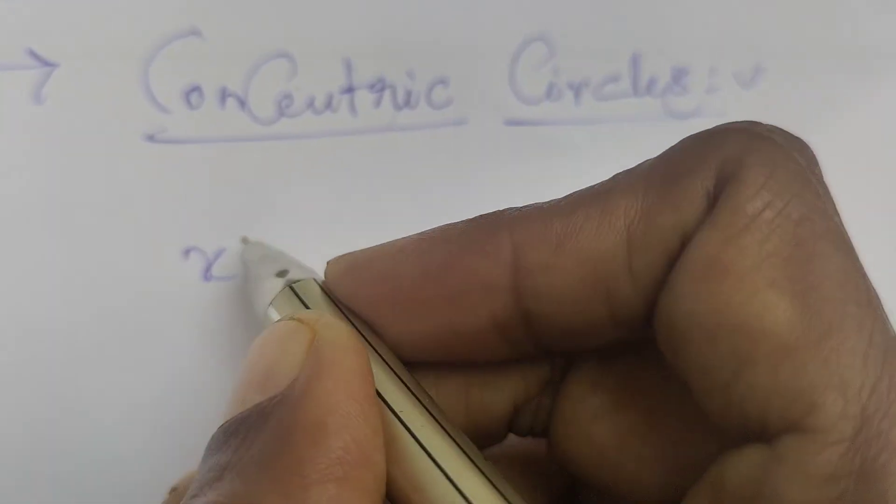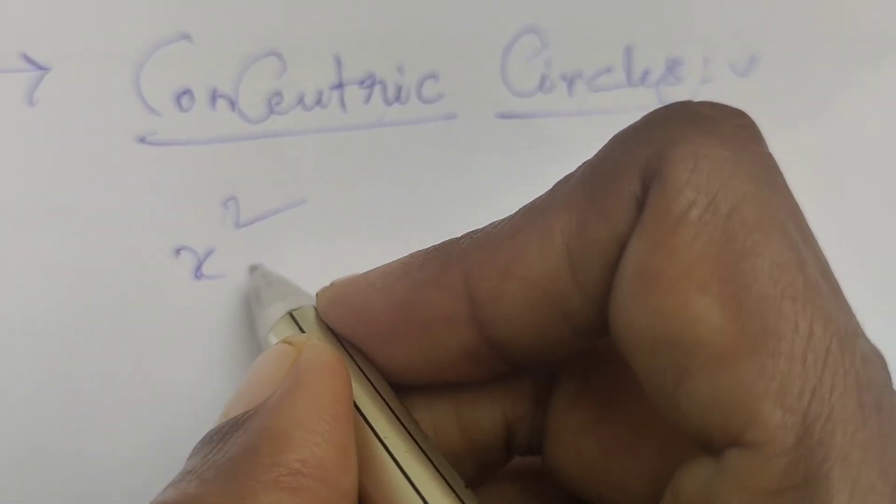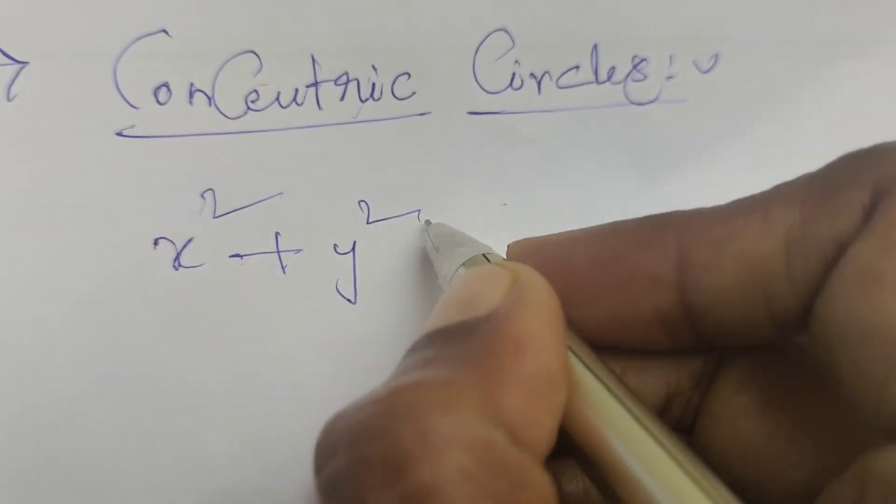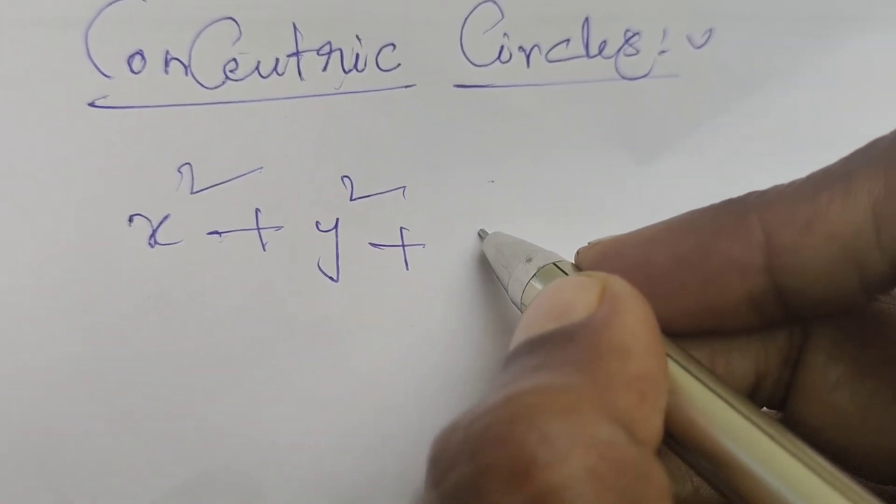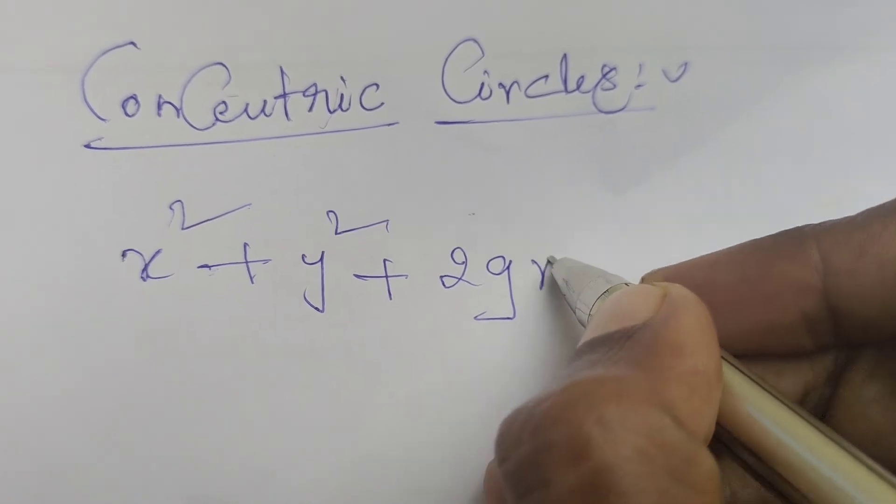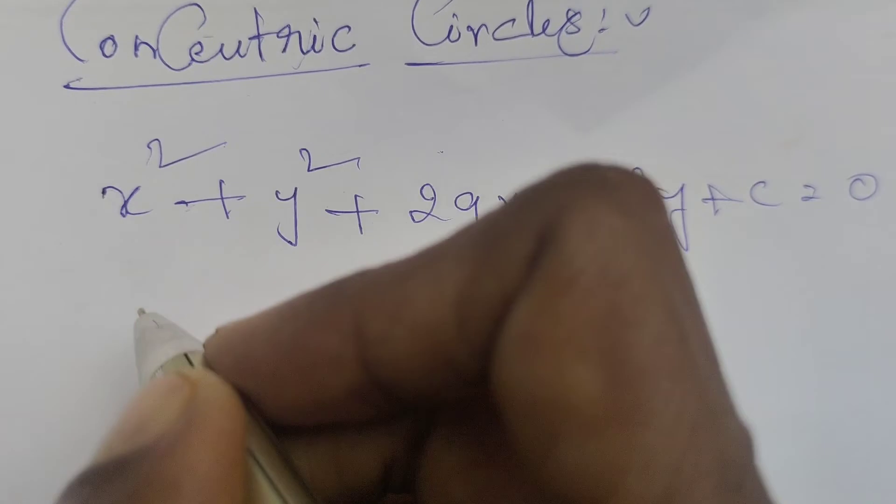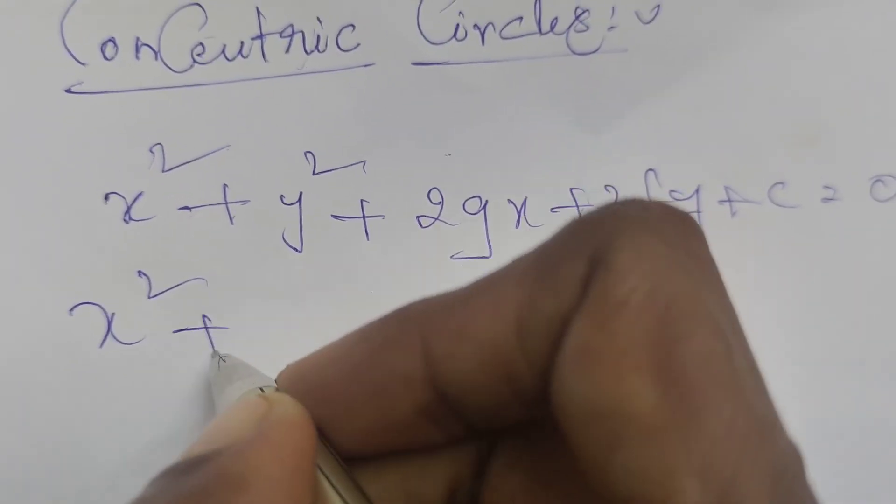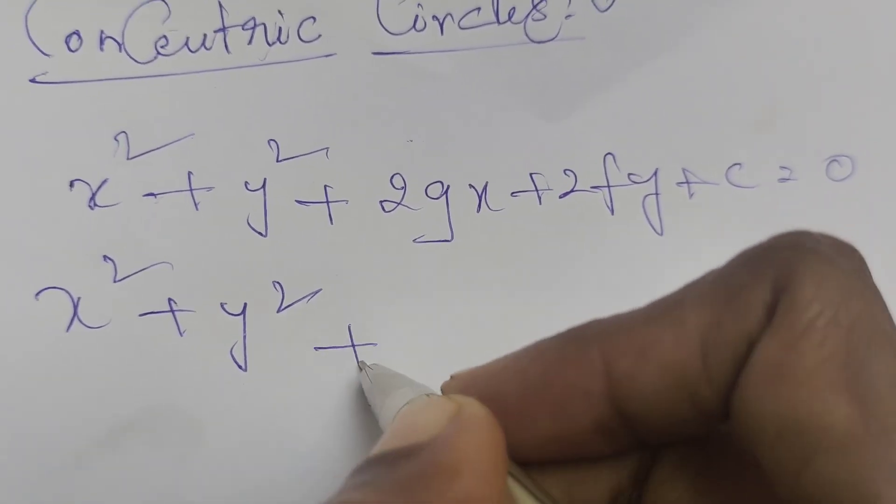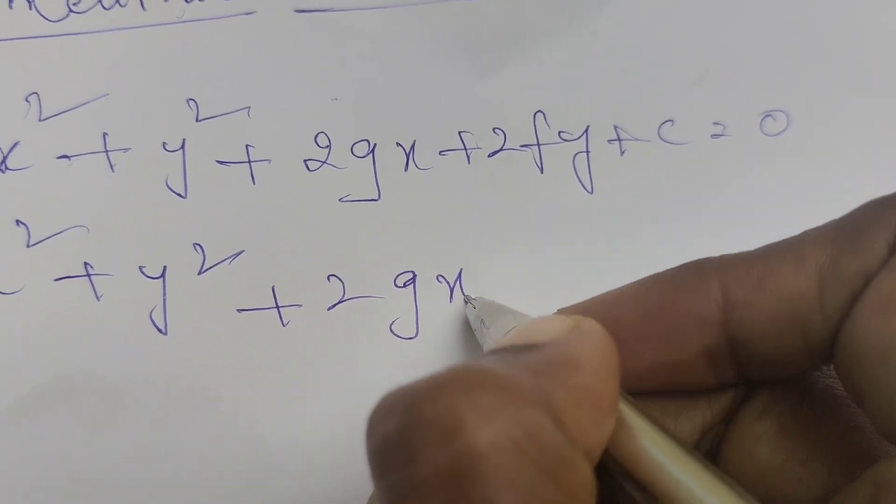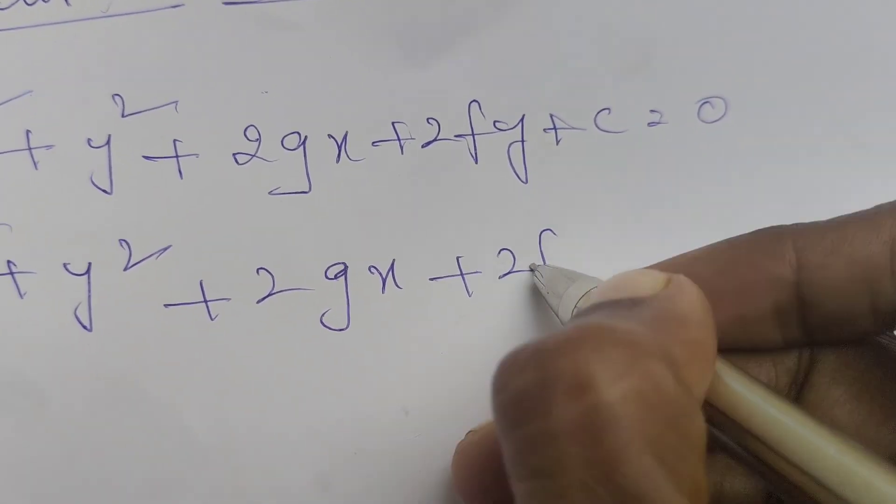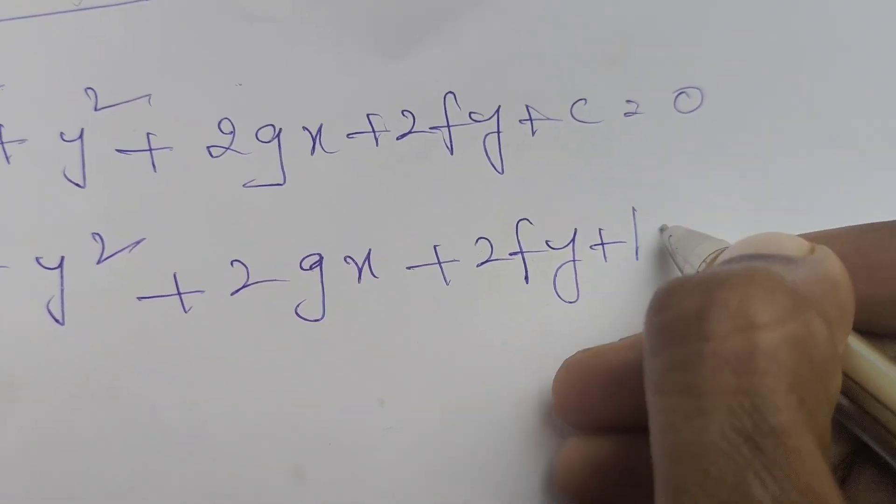The standard form of two concentric circles: x² + y² + 2gx + 2fy + c = 0, and also x² + y² + 2gx + 2fy + k = 0.